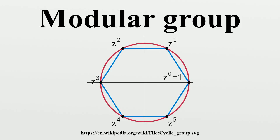The fundamental domain has vertices at 1/2 + i√(3/2) and -1/2 + i√(3/2), where the angle between its sides is π/3, and a third vertex at infinity where the angle between its sides is zero. Each such triangle has one vertex either at infinity or on the real axis. This tiling can be extended to the Poincaré disk, where every hyperbolic triangle has one vertex on the boundary of the disk. The tiling of the Poincaré disk is given in a natural way by the J-invariant, which is invariant under the modular group and attains every complex number once in each triangle. The tessellation can be refined by dividing each region into two halves, and adding an orientation-reversing map.